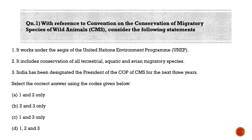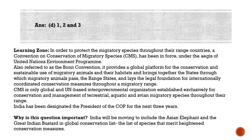Select the correct answer. Option A: one and two only. Option B: two and three only. Option C: one and three only. Option D: one, two, and three. The correct answer is option D — one, two, and three. All the above statements are correct. CMS is an international agreement that aims to conserve migratory species. It works under the aegis of UNEP. It is also known as the Bonn Convention, and India has been designated the president of COP for the next three years.